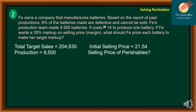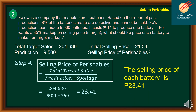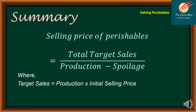Step 4: Find the selling price of the perishable. Total target sales = 204,630; production = 9,500; spoilage = 760. Applying the formula — selling price equals total target sales divided by (production minus spoilage) — we get 204,630 divided by (9,500 minus 760), which equals 23.41 pesos. Therefore, the selling price of each battery is 23.41 pesos.